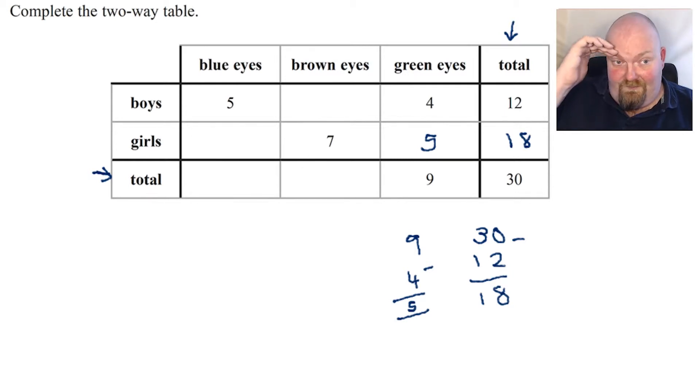Now, if you look at that, you can see that that's actually opened up the rest of the girls column because I know that I've got seven add five, which is 12, and I know that all together I've got 18 girls. So 18 take away 12 leaves me six. So there must be six girls that have blue eyes.